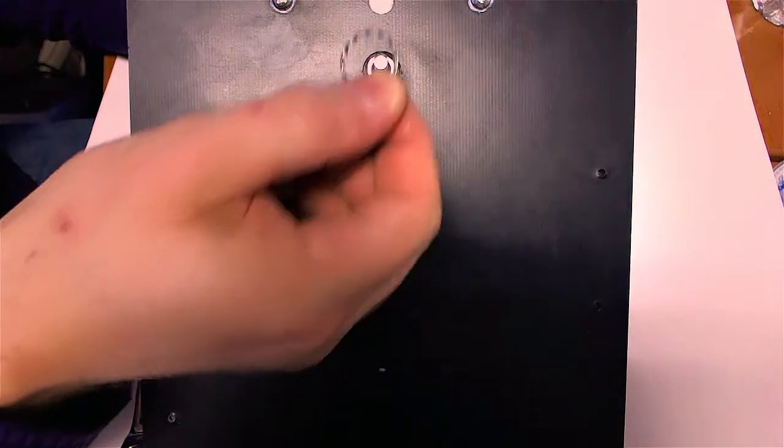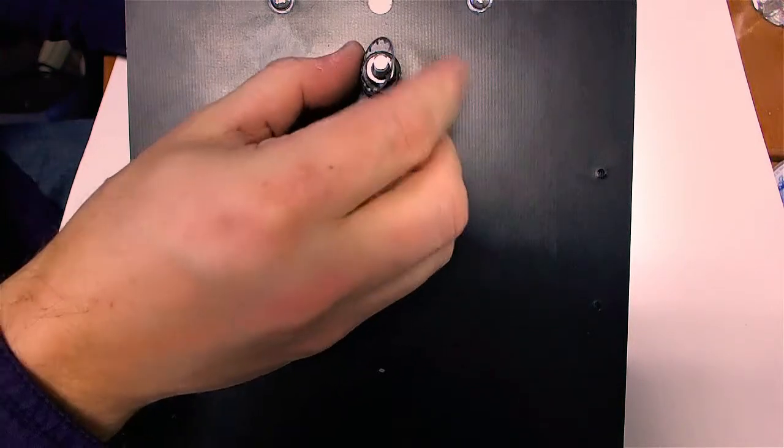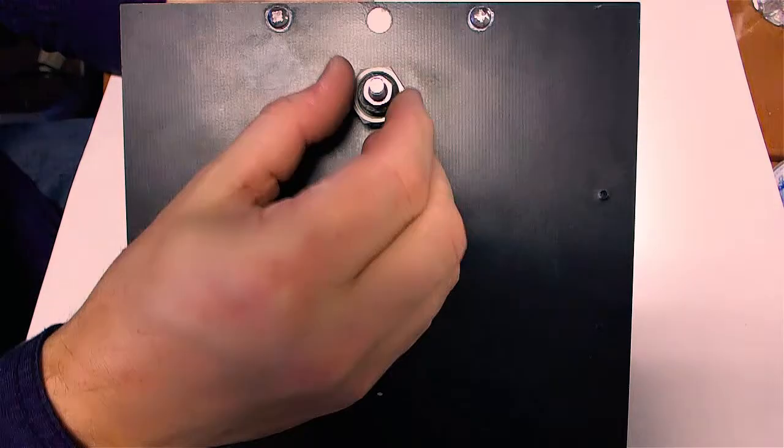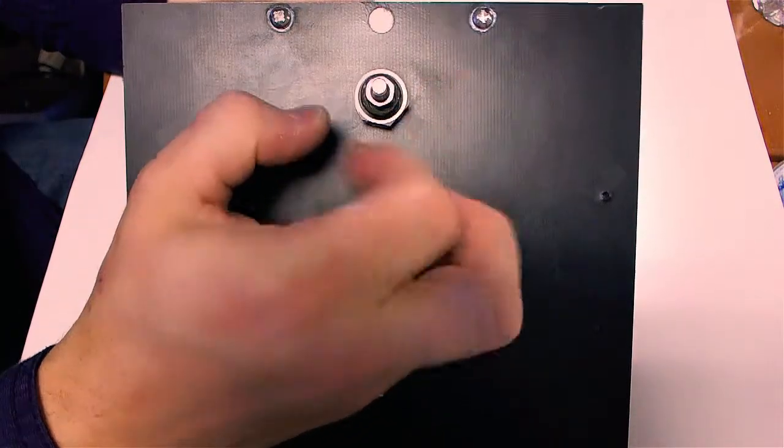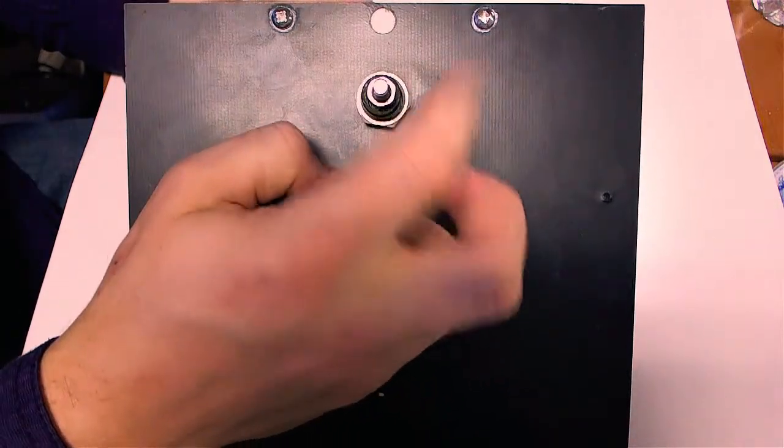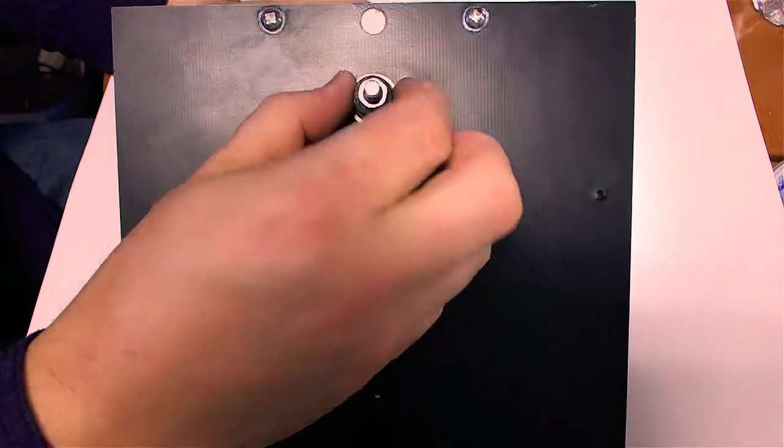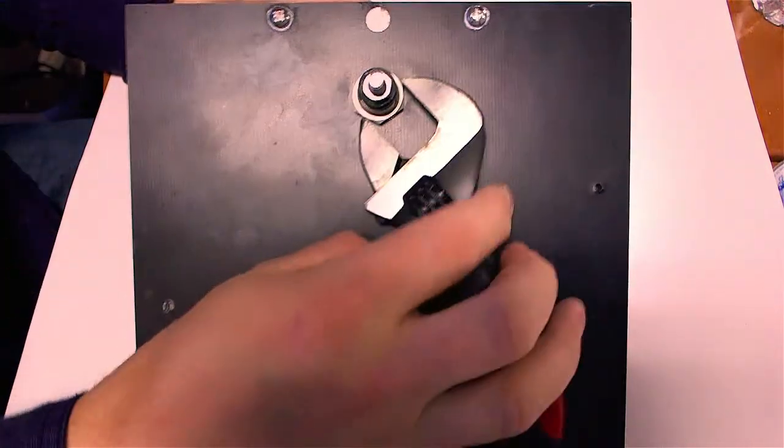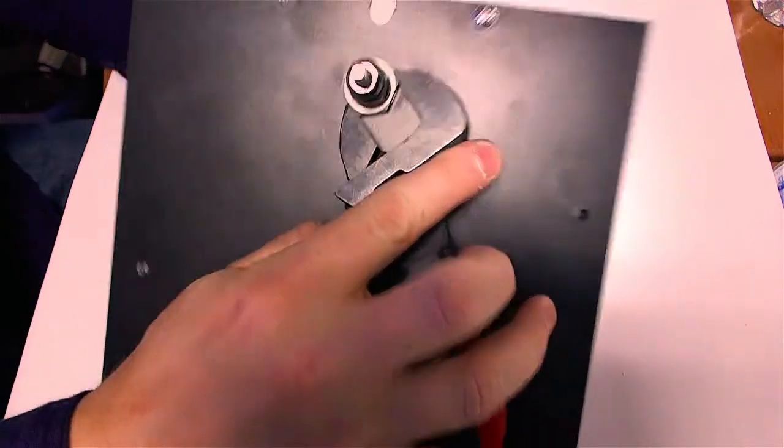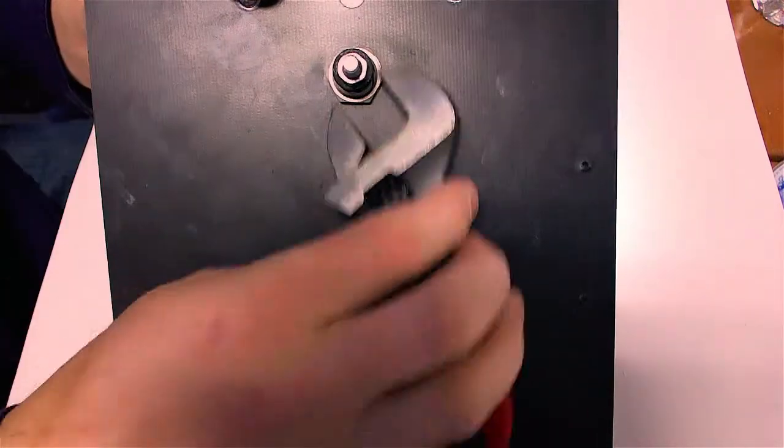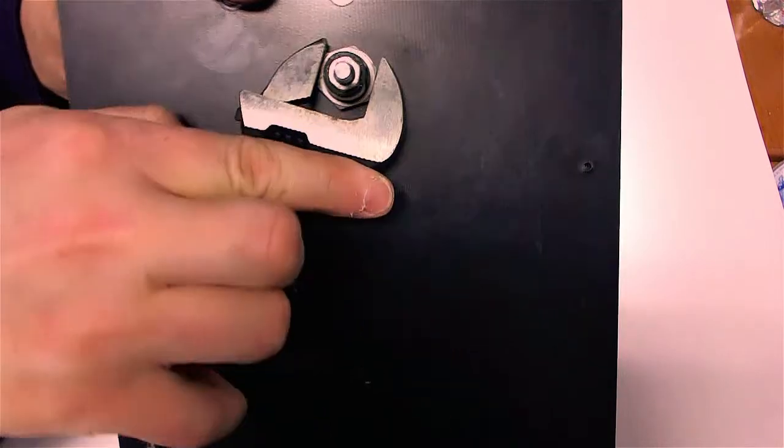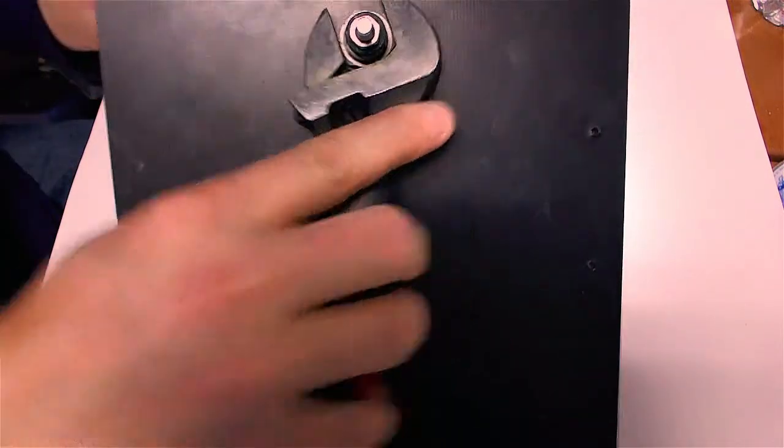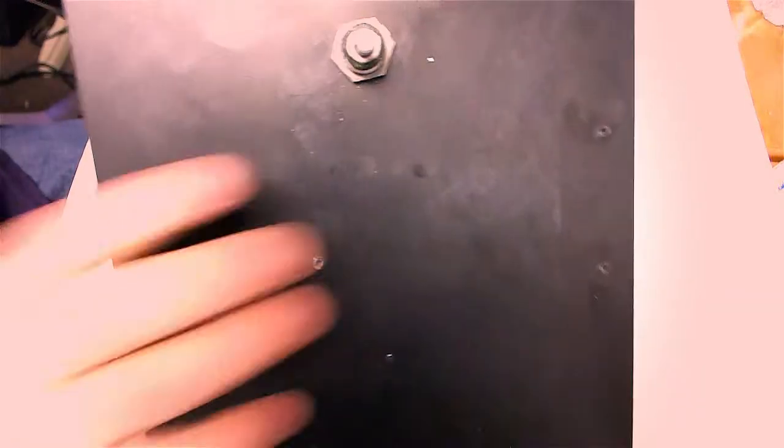Now, let's go ahead and put that locking washer back on. And put the large retaining nut finger tight at first. Then we'll take the adjustable wrench and snug that up.